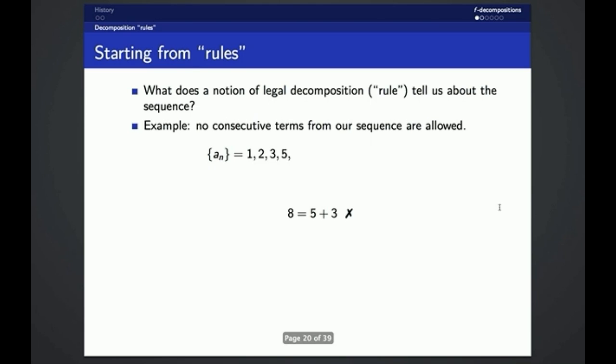And so we keep doing this process, and at each step, we add a number if it can't be written as a sum of non-consecutive terms from our sequence. And if we keep doing this, then the sequence that we get is the Fibonacci numbers.